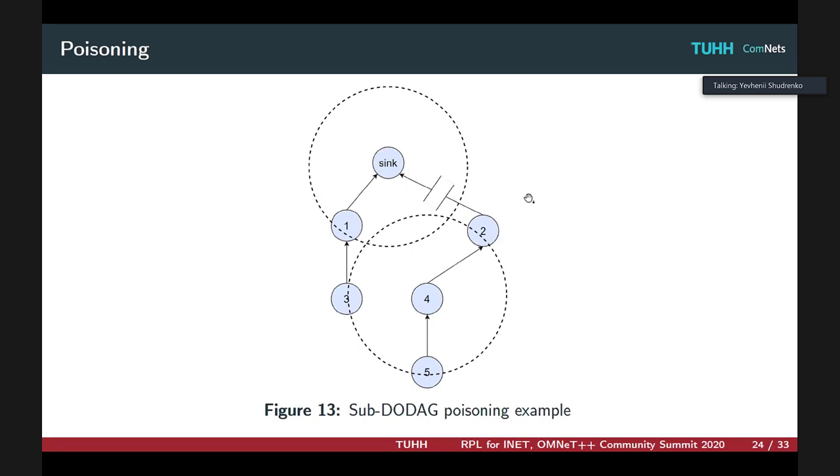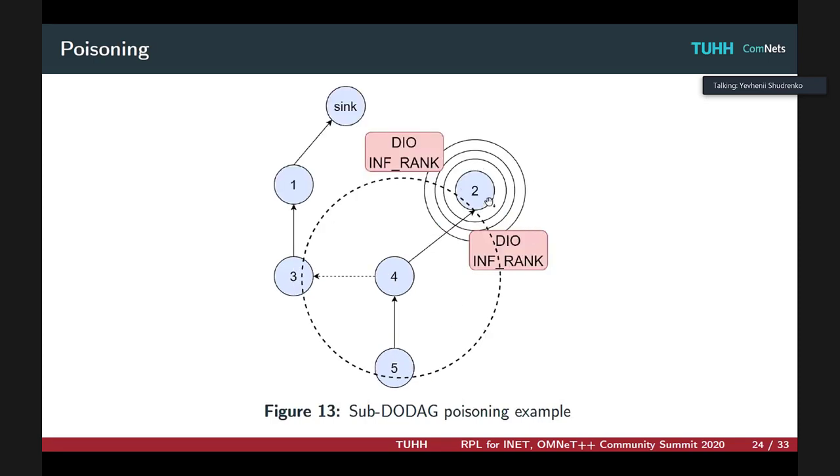Host 2, upon losing connection to the sink, clears its RPL state or DODAG state and should broadcast, if poisoning is enabled, a special DIO advertising an infinite rank to enable its former children to erase it from their preferred parent sets and for these children to rejoin the DODAG using backup parents. In this case, node 4 can use node 3 to keep connection to the same DODAG but update the preferred parent.